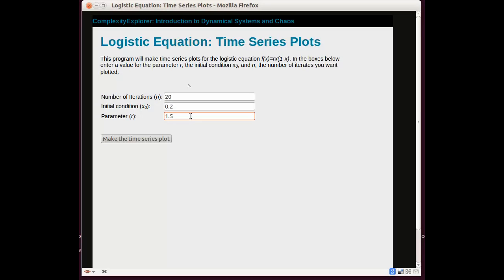In that section, we found that the seed is 0.2, the first iterate is 0.24, and the next iterate is 0.2736. Let's see.